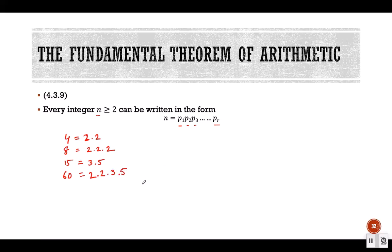Prime numbers play a very important role in number theory. Prime numbers are considered the building blocks of number theory because of this property — every integer number can be represented as a product of prime numbers in this form.